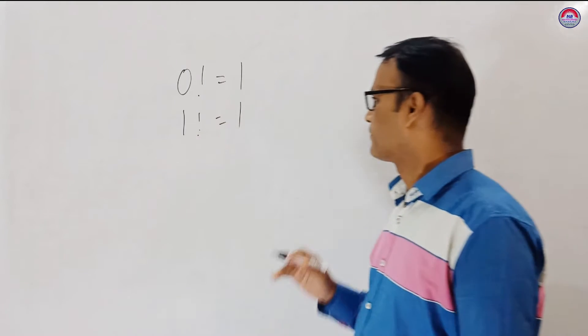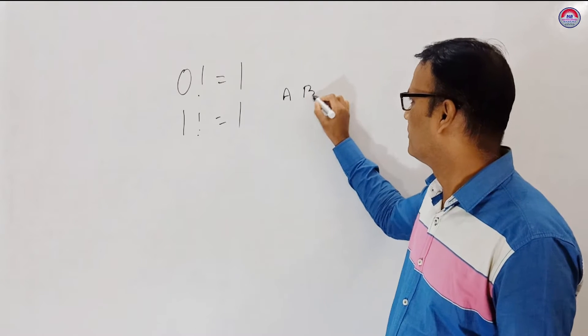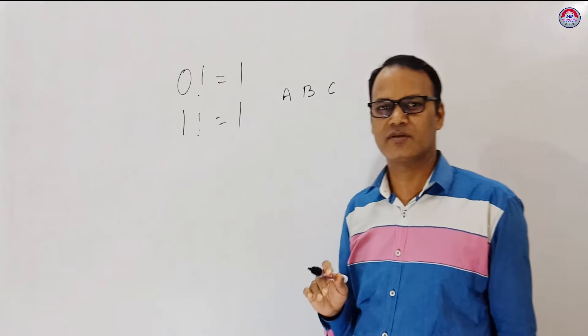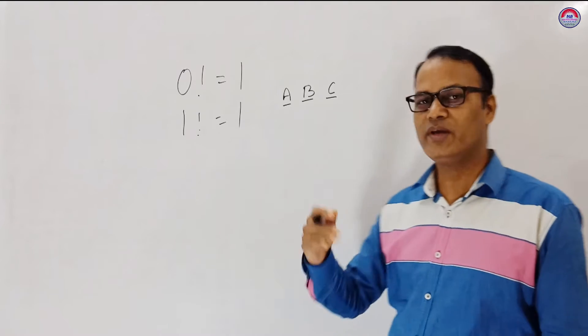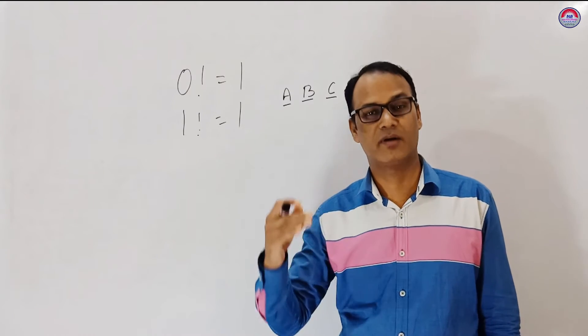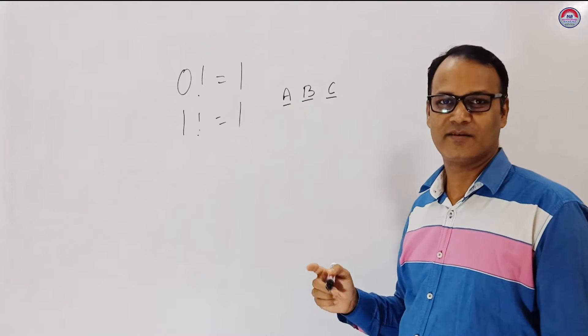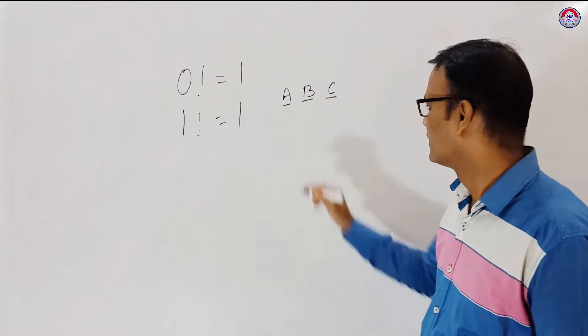So factorial, we start. Let's say we have 3 letters A, B and C. Here question comes, how to arrange these 3 letters so that we can write maximum number of words using these 3 letters without repeating letters. How?